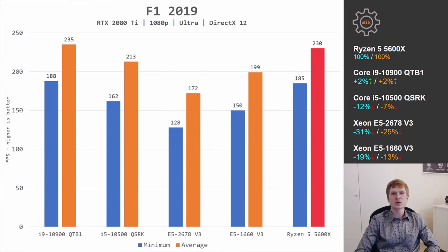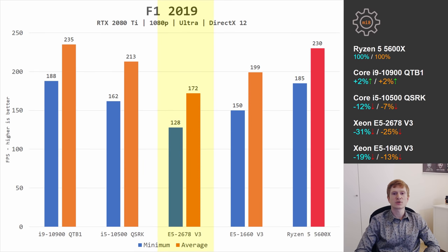In F1 2019, which loads many CPU cores but prefers strong IPC and low memory latency, the Ryzen 5 5600X and Core i9-10900 QTB1 produce nearly identical results — Core i9 is just 2% faster. The Core i5-10500 is 12% and 7% slower. The Xeon E5-2678v3 shows the worst result — 31% and 25% slower — a significant gap, though Xeon is much cheaper. The overclocked Xeon E5-1660v3 at 4.2 GHz still loses 19% and 13% in minimal and average FPS.